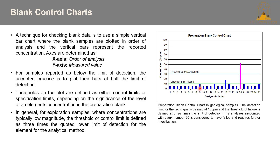Thresholds in a plot are defined as either control limits or specification limits, depending on the significance of the element concentration in the preparation blank. The green line is the detection limit at 10 PPM, and the threshold is three times the lower limit of detection — in this case 30 PPM. It's important to check all elements, with particular attention paid to elements of interest. Everything here is doing fine except for sample number 20 in pink, which is considered a failure and requires further investigation. Remember the lab is your partner.